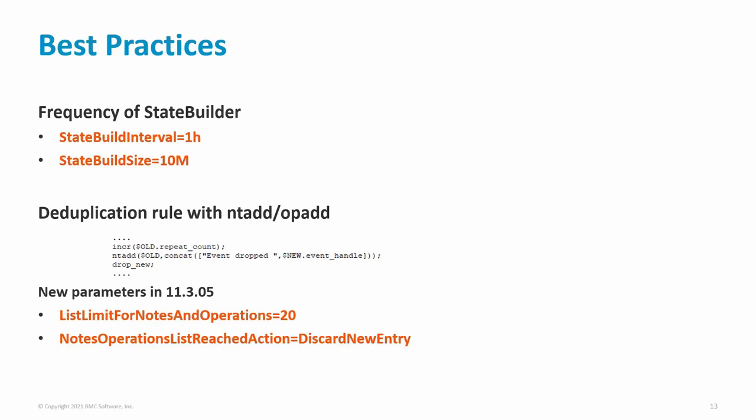It can be quite common to have a deduplication rule that increments the repeat count slot of an existing event, adds text to MC_Notes or MC_Operation slots, then drops the new event. This can cause problems during an event storm, as the MC_Notes or MC_Operation slots will grow unbounded and cause a performance problem, particularly with event propagation. With version 11.305, two new parameters were introduced: ListLimitForNotesAndOperations — the limit on the number of entries to keep on MC_Notes and MC_Operation slots — and NotesOperationsListReachedAction, which defines the action when the limit is reached (default: discard the entry; alternative: RemoveOldestAddLatest). If upgrading to 11.305 is not possible, check deduplication rules and modify them to use EntiCount or OpCount to check the number of entries before adding one.